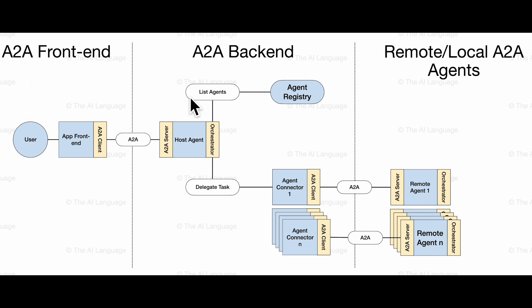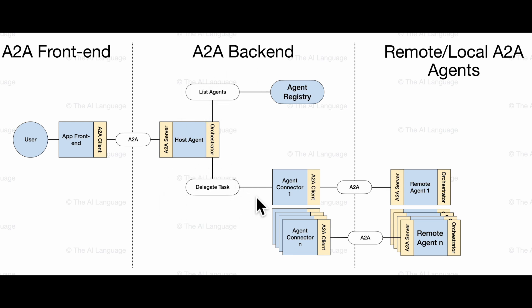I think this is a wonderful architecture that I'm going to use to develop my A2A multi-agent system. If you have any questions or comments, please put them below, and if you'd love to see this implementation completed, please like this video and subscribe to my channel. In the next video, I'm going to develop multiple remote agents — at least two — along with the orchestrator, an agent registry with dynamic discovery through the list agents tool, and a delegate task functionality with agent connectors so tasks can be delegated as needed. Thanks for watching and I'll see you in the next video.